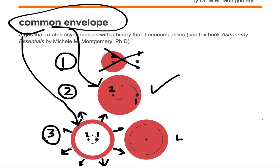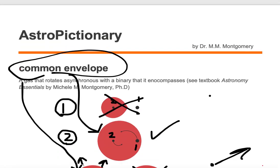And let's finally look at case four. In case four, we only have one star. Star number two has been ejected. It's out there somewhere. Here is our gas, but it does not encompass a binary, so this would not be an example of a common envelope. A common envelope is a gas that rotates asynchronously with a binary that it encompasses.